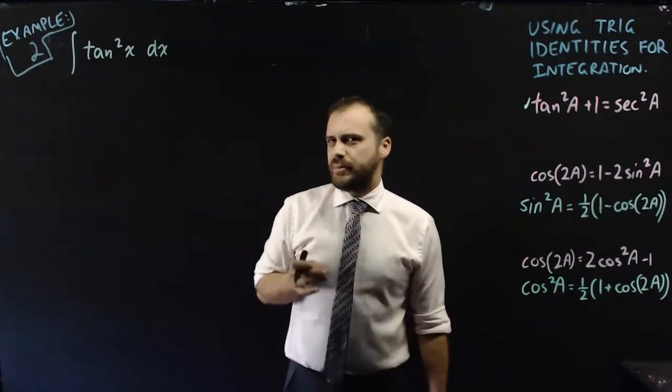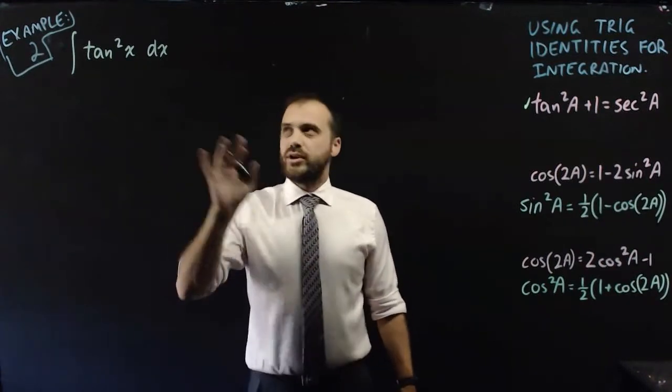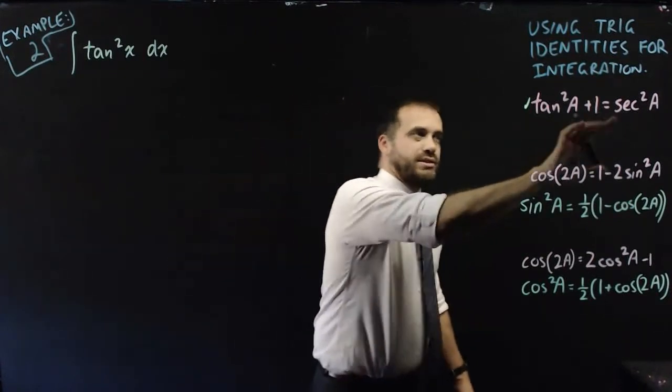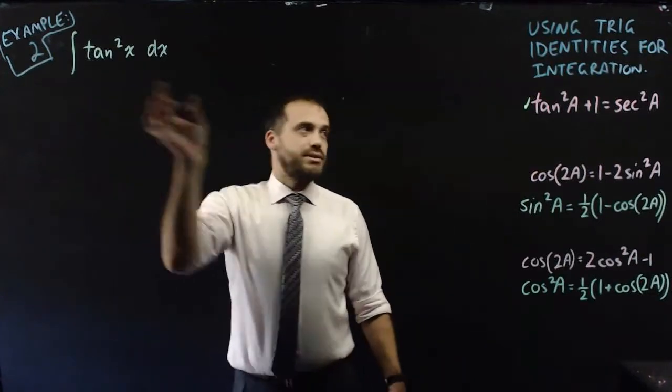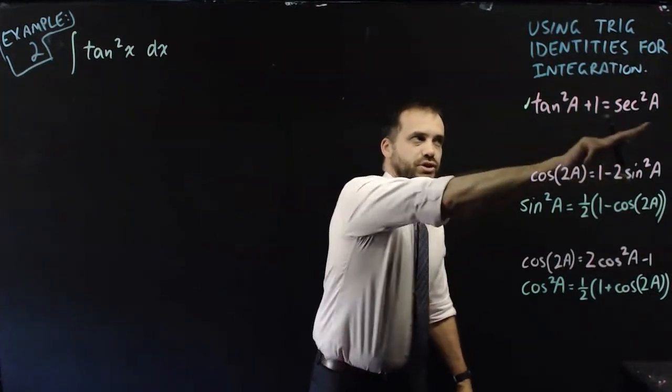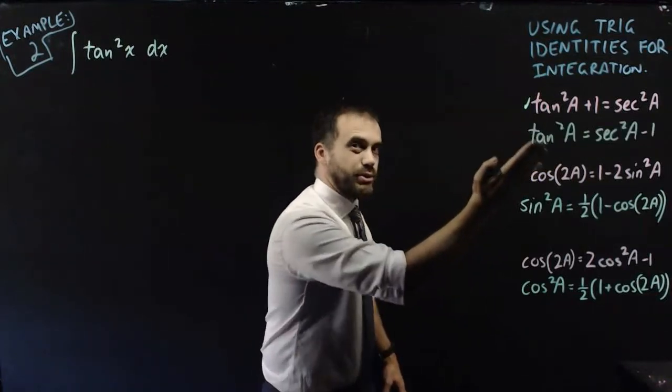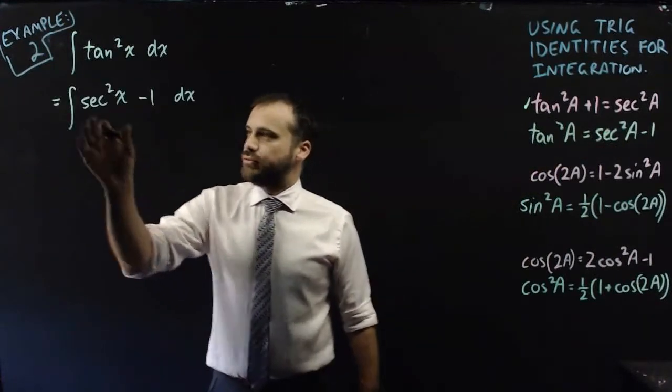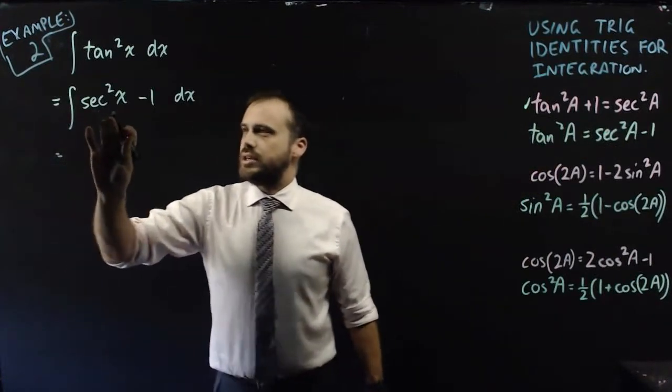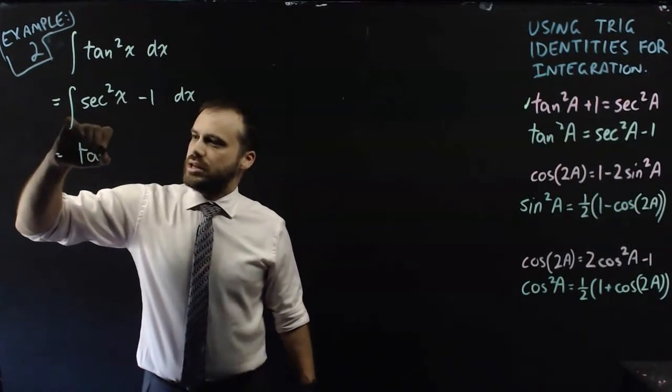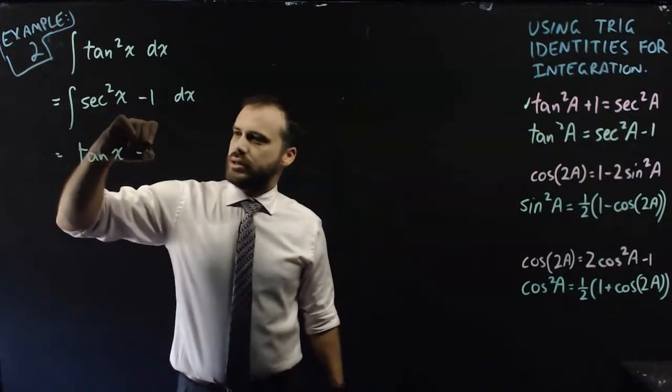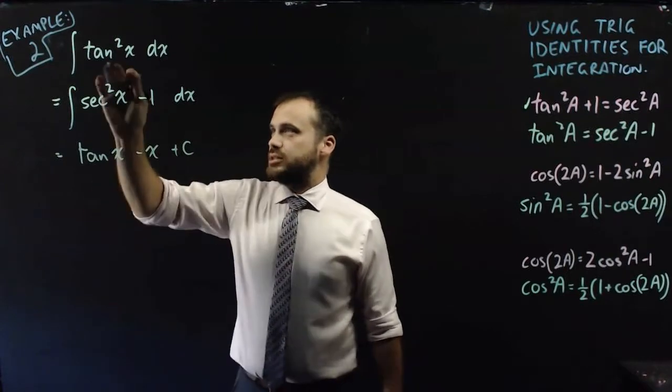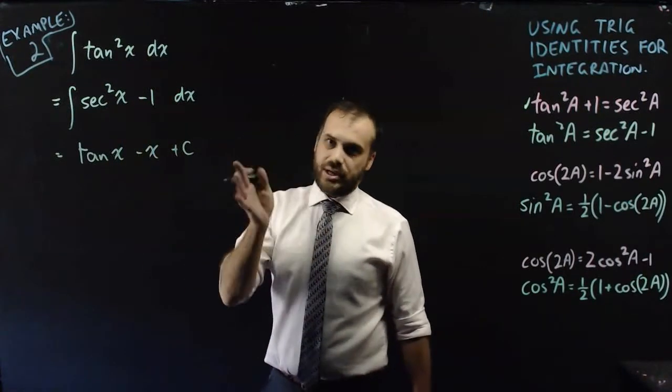Now I just said that we don't want to integrate powers, but that's only sort of half true. We don't really know how to integrate tan²x, but we do know how to integrate sec²x. So we can replace the tan²x with a rearranged version of this one: tan²A equals sec²A minus one. Put that into here. Any good formula sheet will tell you that the integral of sec²x is just tan x and the integral of negative one is negative x, and don't forget your plus C on the end.